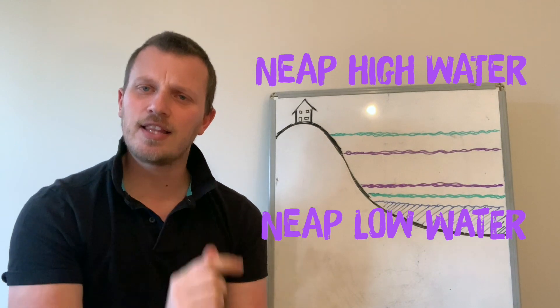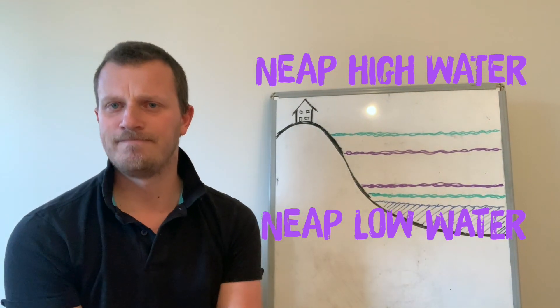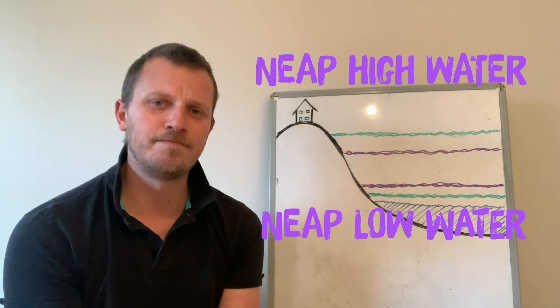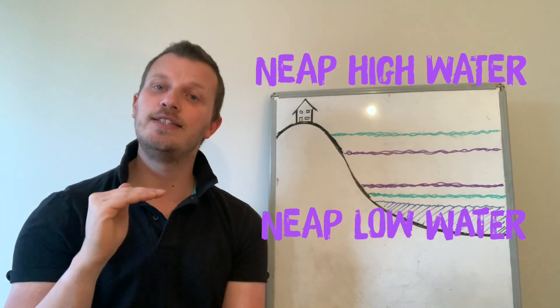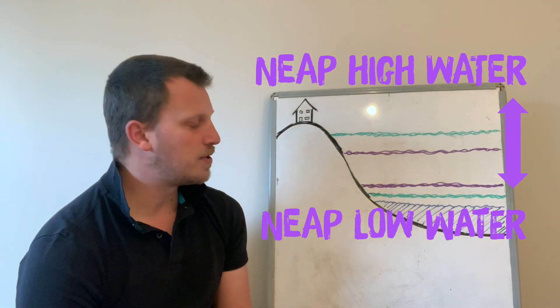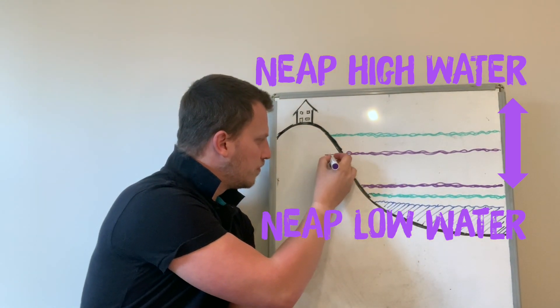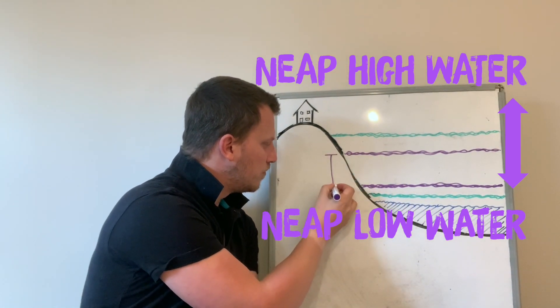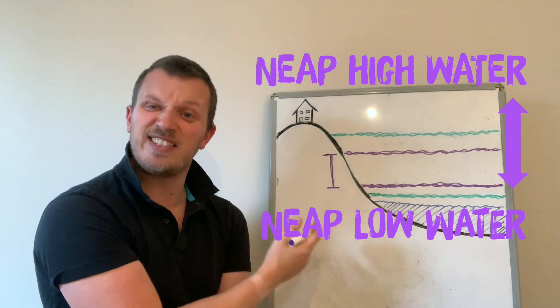Now the other thing for us to know is something called tidal range. Now that's actually quite important. Tidal range is the difference between high water and low water. So for a neap, the difference between high water and low water isn't that much.